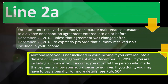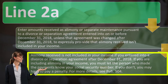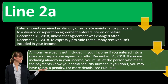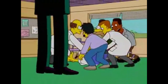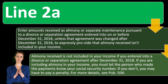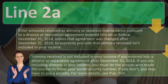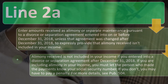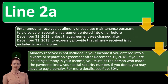Alimony received is not included in your income if you entered into a divorce or separation agreement after December 31, 2018. If you are including alimony in your income, you must let the person who made the payments know your social security number — if you don't, you may have to pay a penalty. For more details, see Publication 504. If you're including it in income, you'd expect the person paying got a deduction, similar to contracting work where you provide your SSN or EIN.